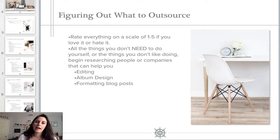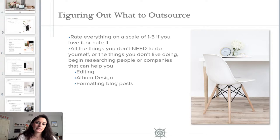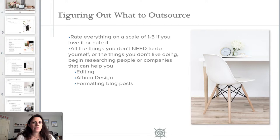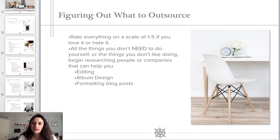Once you have your workflow written out, I suggest printing it out and rating every single task on a scale of one to five — whether you love it or hate it — and then put a star if you absolutely have to be the person to do it, or put an X if you don't need to do it yourself. This doesn't mean every task you hate will be outsourced immediately, but as you grow and scale your business, you'll be able to start handing things off slowly and researching which subcontractors or companies can do the things you don't like or don't need to do yourself.